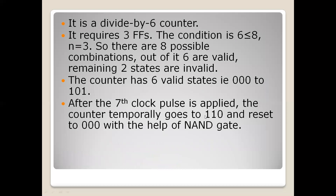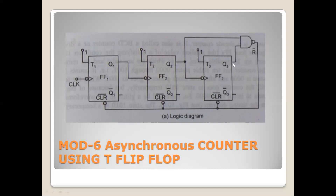When the counter temporarily goes to 110 — meaning Q3 is 1, Q2 is 1, and Q1 is 0 — both ones come to the input of the NAND gate (Q2 and Q3). When both inputs of the NAND gate are 1, the output becomes 0. That zero is applied to the clear input of all flip-flops, resetting them all to 000. The initial state is achieved again, and counting continues in the loop from 0 to 5.